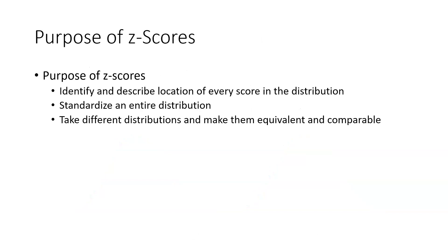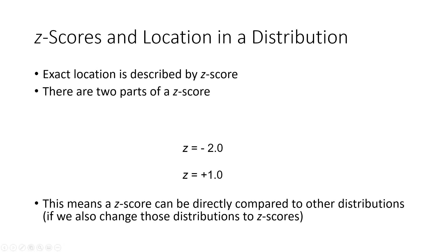The purpose of z-scores is to allow us to make those kinds of comparisons. A z-score identifies and describes the location of every score in the distribution. It allows us to standardize an entire distribution, and we can take different distributions and make them equivalent and comparable to each other. When you compute a z-score from a score, it allows you to describe the exact location of that score in the distribution with just one number.